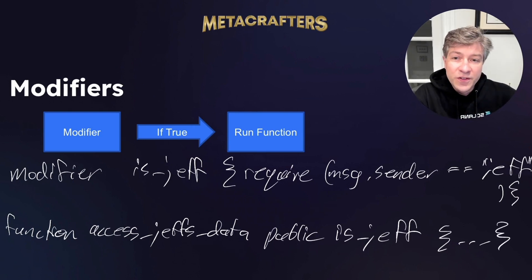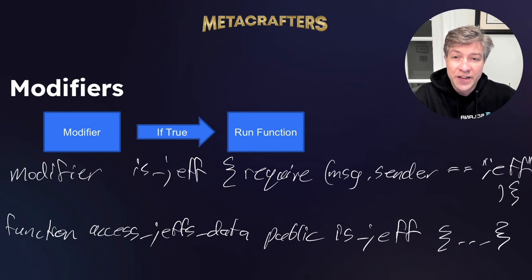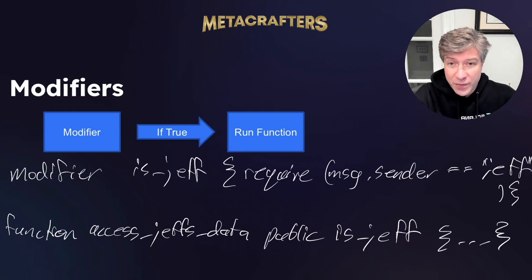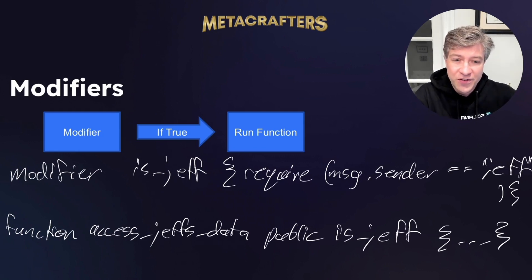This is useful because one modifier can be applied to as many functions as you would like. For example, you can use the same modifier on another function — 'open Jeff's mail', for example — without needing to redefine isJeff.